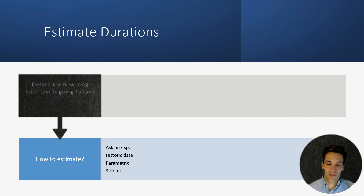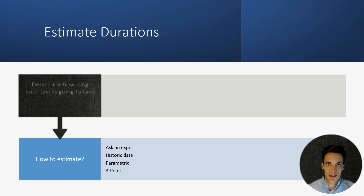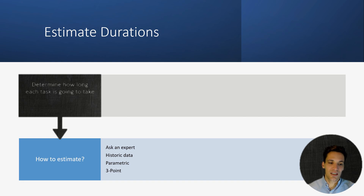We can ask an expert — go to someone who's completed a similar task on another project and ask for their input. We can get historic data by looking at similar projects and seeing how long that activity took, and use that as the basis for our estimate. Then we can adjust these by a parameter. For example, if trenching one kilometer took one month on another project, and on our project we need to trench two kilometers, we can assume that activity will take two months. That's parametric estimating.